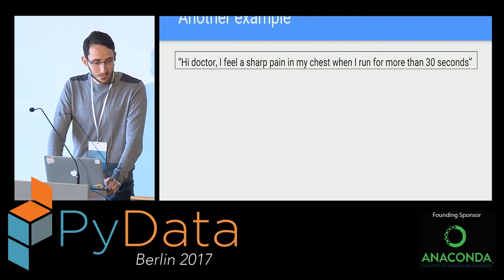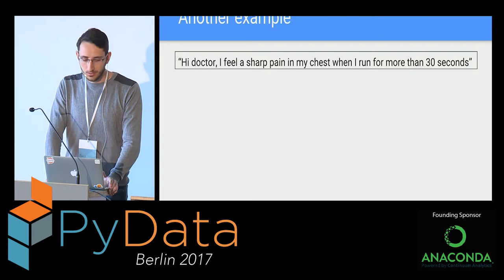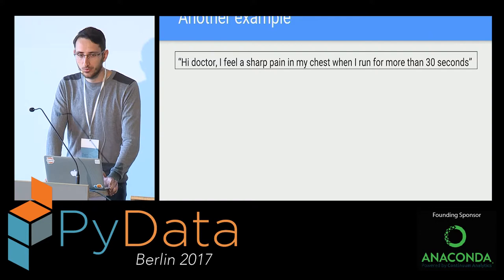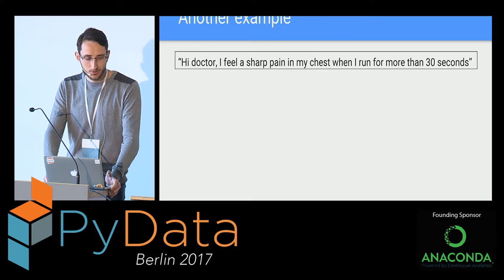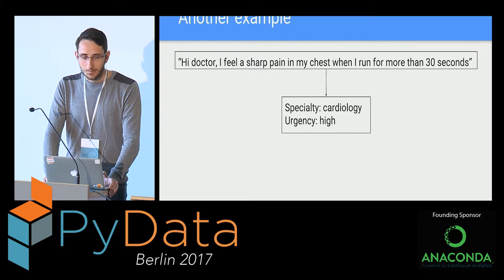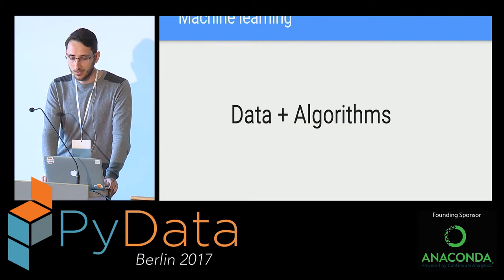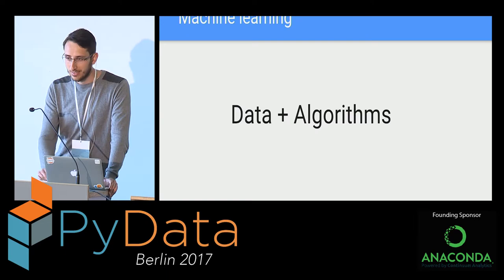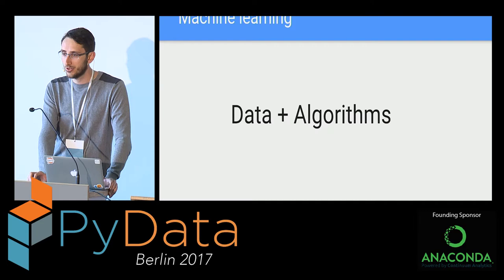Here's another example related to something we'll talk about later. If you're a medical company looking to connect people to the right doctor, and you get a patient who says, 'I feel a sharp pain in my chest,' what you want the machine to say is: this person needs to see a cardiologist, and right now. Machine learning is basically a combination of having that data and the algorithms that get the machine to learn something useful from it.